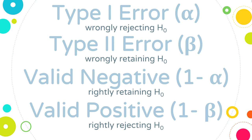There are two possible decisions — reject or retain — and two possible realities: the null is true, or the null is false. That two-by-two results in four possible outcomes. Here in our example, the null is that the guy is sober. If I reject the null, I conclude he's drunk. But if I am wrong in concluding he's drunk — I called him drunk but he was really sober — that would be a type one error.